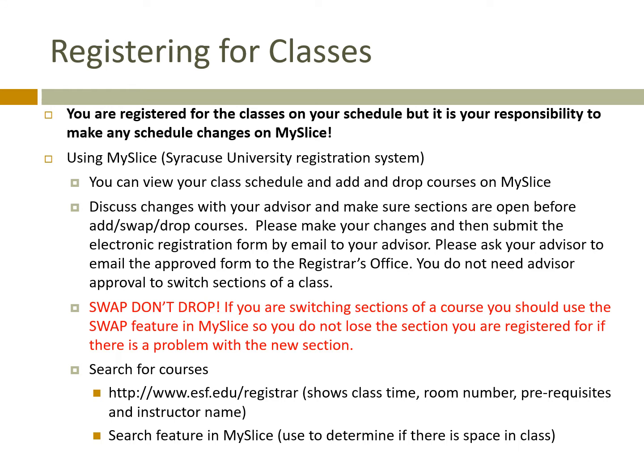Please make your changes and then submit the form to your advisor by email. The electronic registration form can then be forwarded by your advisor after approval to the Registrar's Office. You do not need advisor approval if you're just switching sections of a class. I strongly recommend that you swap, but don't drop, if you are just switching sections. This will allow you to keep the seat that you have in case there's an issue with the one that you're trying to add.